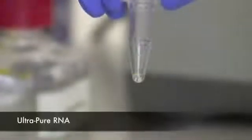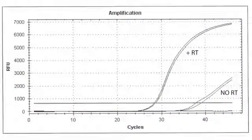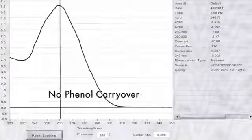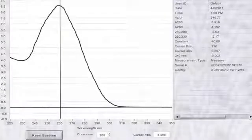The end result of your purification is high-quality, DNA-free total RNA. Durexol is also able to boast an enhanced recovery of smaller RNAs that are normally more difficult to isolate. For example, small RNAs less than 200 nucleotides are enhanced by about 100%. MicroRNAs less than 40 nucleotides are enhanced by about 400%.